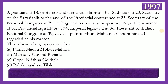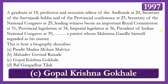Next question: A personality description is given — graduated at 18, professor and associate editor of the Sudharak at 20, secretary of the Sarvajanik Sabha and provincial conference at 25, secretary of the national Congress at 29, leading witness before important royal commission at 31, provincial legislature at 34, imperial legislature at 36, president of the Indian National Congress at 39. He was a patriot whom Gandhiji regarded as his master. Who was he? The answer is option C — Gopal Krishna Gokhale — born in Kolhapur, Maharashtra, in 1866.